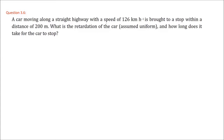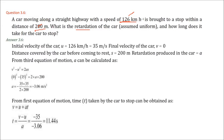A car moving along a straight highway at 126 km/h is brought to rest within 200 meters. Initial velocity = 126 × 5/18 = 35 m/s, final velocity = 0, distance = 200 m. Using v² = u² + 2as, we get a = −3.06 m/s². Then using v = u + at, we find the time to stop is approximately 11.44 seconds.